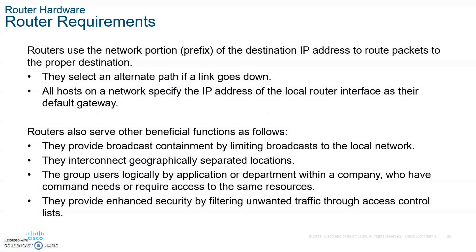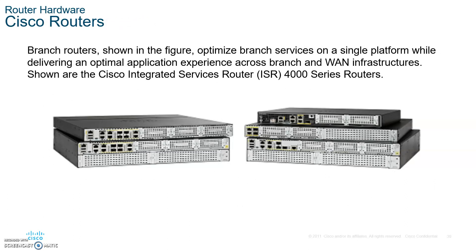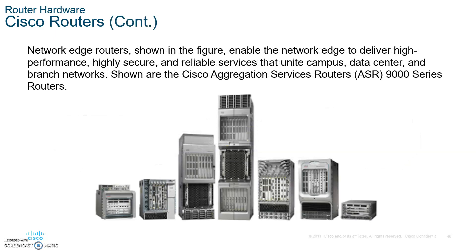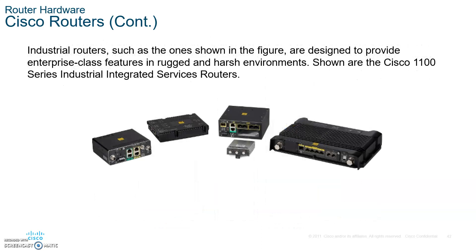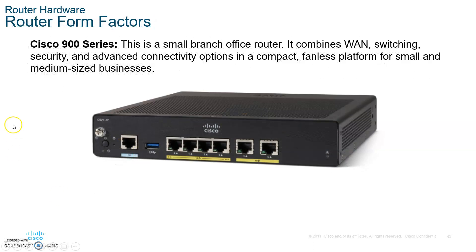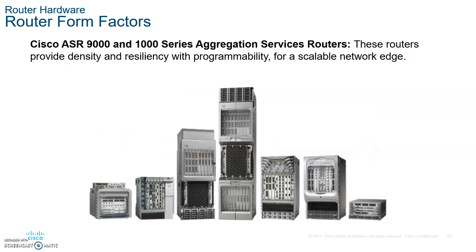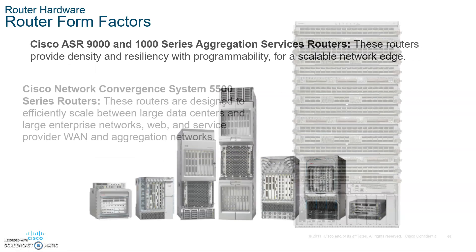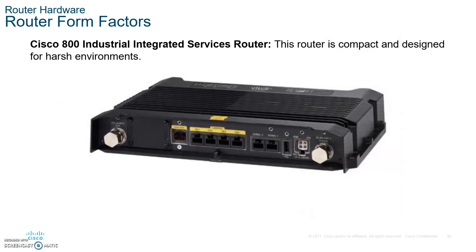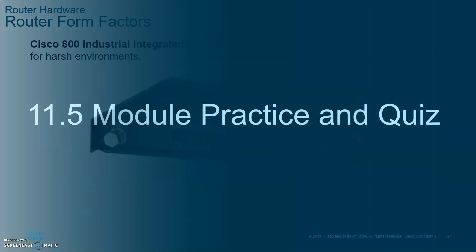When it comes to router hardware, the 2900 series does everything you need. The 4000 series is a bit more expensive. The 9000 series is more for ISPs. The 900 series routers are for branch offices — please write that down. The 800 Industrial Integrated Services Router is designed for harsher environments — it can be dropped or beaten up and still keep running.